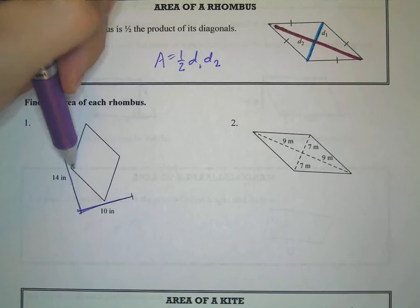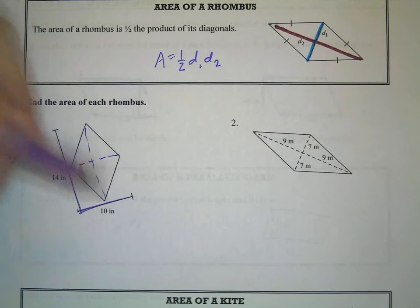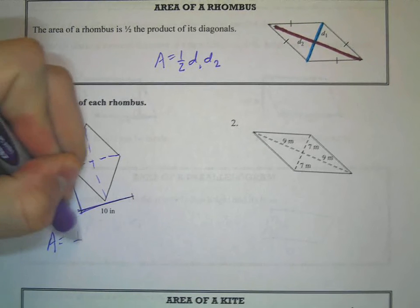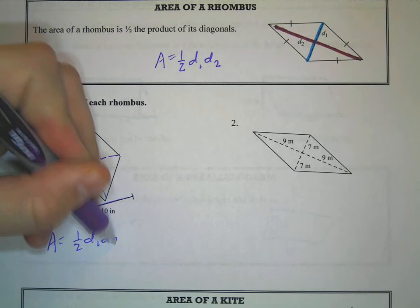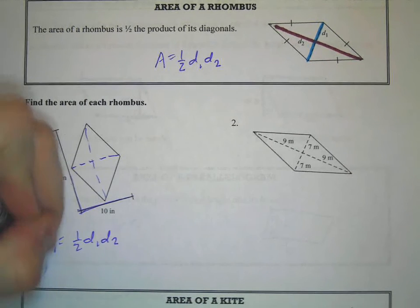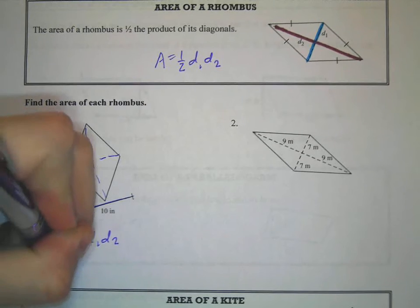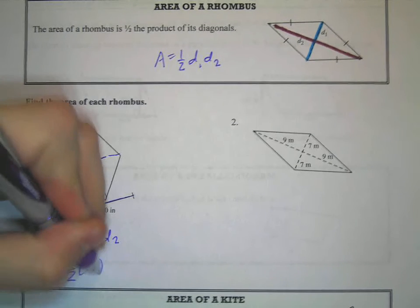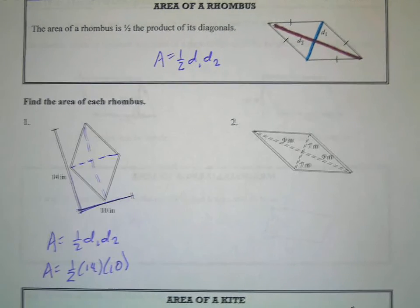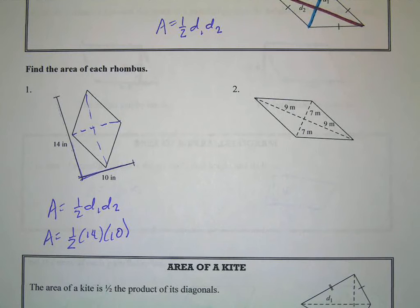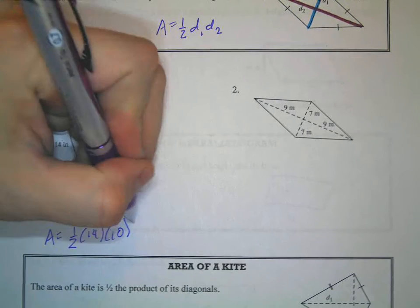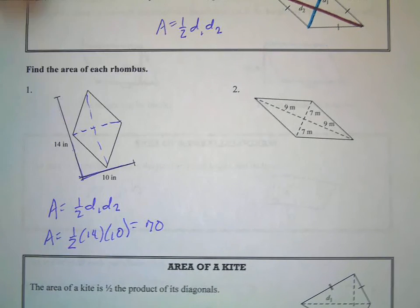This is trying to tell you that that's what the diagonals are. So this distance is 10 here. This is 14. So we have 1/2 D1, D2. So we have 1/2 of 14 times 10. So pick either of those numbers to take half of. I'll take half of 14, so that's 7. 7 times 10 is 70 square inches.